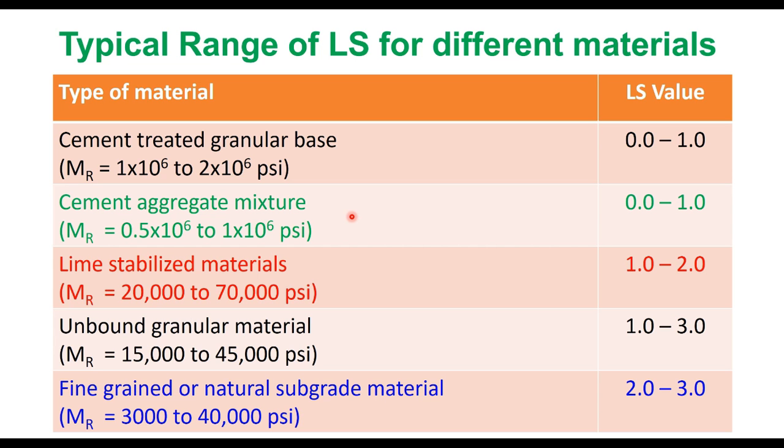This loss of support will depend upon the type of material, and these are the typical ranges of loss of support for different materials as given in AASHTO guide. For cement treated granular base having M_R value of 1×10^6 to 2×10^6 psi, this can be taken as 0 to 1. Similarly for other layers, for fine grained or natural subgrade material where M_R value is 3,000 to 40,000 psi, this loss of support can be taken as maximum, that is 2 to 3.